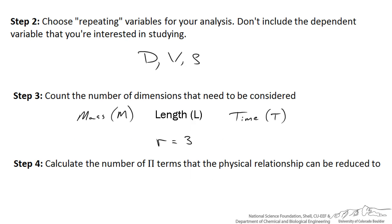Step 4 is to calculate the number of pi terms that these relationships can be reduced to. The Buckingham Pi theorem says the number of pi terms is k minus r — in this case 5 minus 3 — and that equals 2. What we will find is that the first pi term is the Reynolds number and the second pi term is the coefficient of drag.